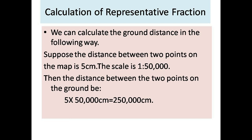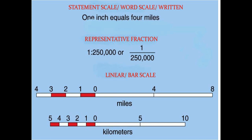Let us take one example to calculate the representative fraction. Suppose the distance between two points on the map is 5 centimeters and the scale is 1 is to 50,000. Then the distance on the ground will be 5 × 50,000 = 250,000 centimeters, which equals two and a half kilometers on the ground.